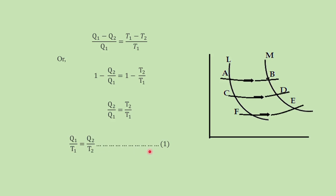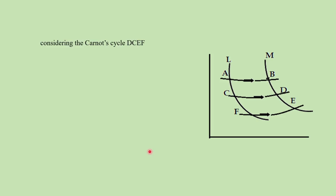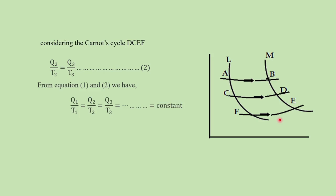Let us name this as equation number 1. Similarly, we will consider the second Carnot's cycle DCEF, and from this we get the expression Q2 by T2 equals Q3 by T3, where Q2 is the amount of heat absorbed and Q3 is the amount of heat rejected. From equations 1 and 2, we find Q1 by T1 equals Q2 by T2 equals Q3 by T3 — this ratio can be taken as constant.